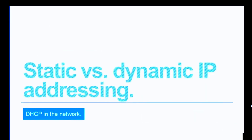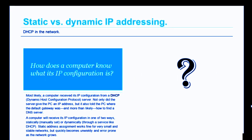We begin by talking about static versus dynamic IP addressing. How does a computer know what its IP configuration is? More than likely, a computer received its IP configuration from a Dynamic Host Configuration Protocol server. Not only did the server give the PC an IP address, but it also told the PC where the default gateway was, and more than likely, how to find a DNS server.